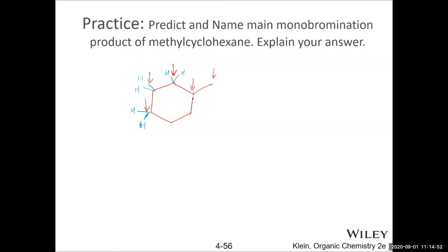How many hydrogens are on each carbon: the methyl carbon has three H, the C1 carbon (bonded to methyl and ring) has one H, the C2 and C6 carbons each have two H. The carbon with the fewest hydrogens — C1 (tertiary) — reacts preferentially. The product is 1-bromo-1-methylcyclohexane (bromo and methyl on the same carbon). The actual mechanistic reason will be explained in Chapter 11.